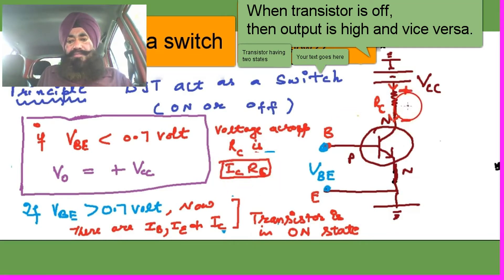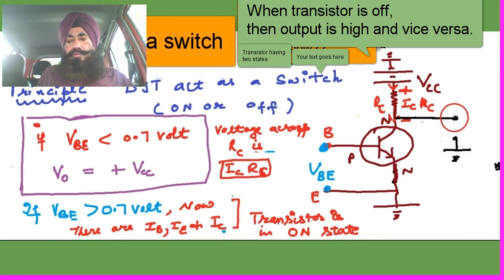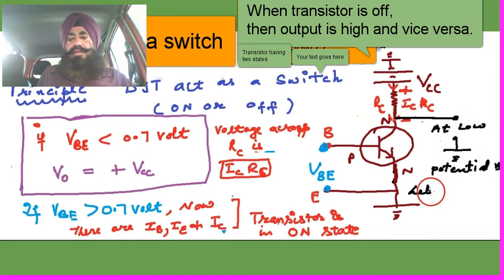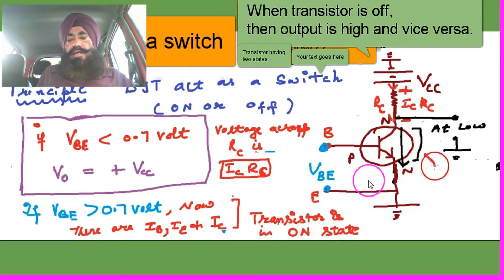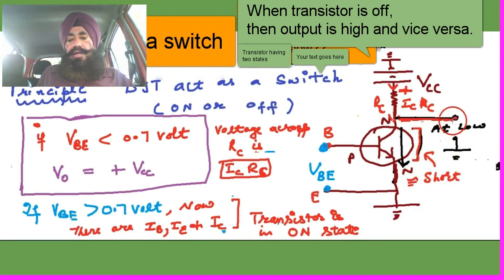Voltage will appear across RC as IC×RC. We are taking the output at this point, and here the low voltage — low voltage means 0 voltage, low potential. So if it is on, the potential at the output will be low. There is a short circuit between collector and emitter, so low voltage at the output.